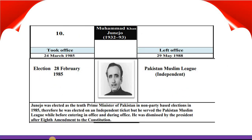Muhammad Khan Junejo took office 24th March 1985 and left office 29th May 1988. He was elected in elections held on 28th February 1985 and belongs to Pakistan Muslim League. Junejo was elected as the 10th Prime Minister of Pakistan in non-party-based elections in 1985. He was elected on an independent ticket but served the Pakistan Muslim League before and during office. He was dismissed by the President under the 8th amendment to the Constitution.